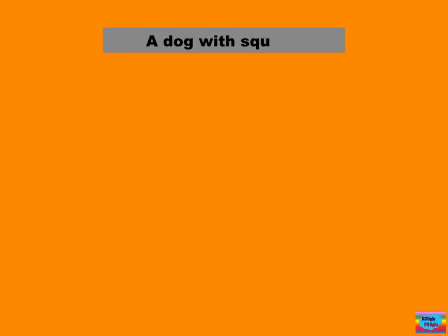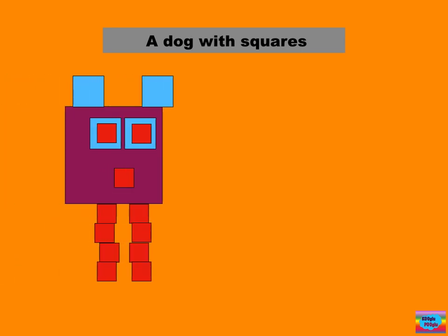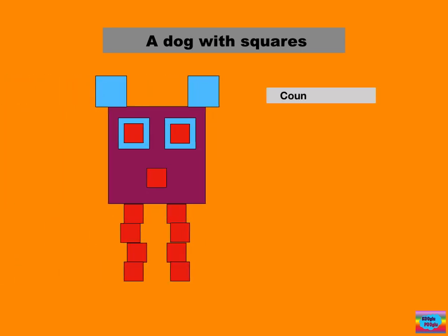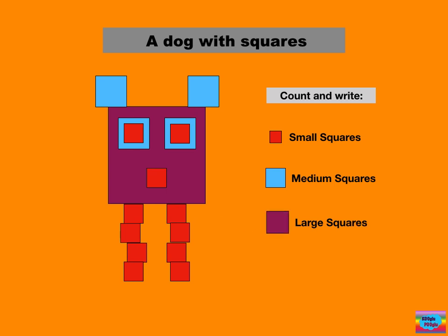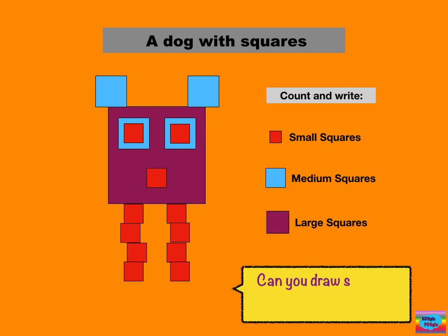And a dog with squares. Here comes my dog. Count and write how many small squares, medium squares, and large squares. Can you draw something by using rectangles only?